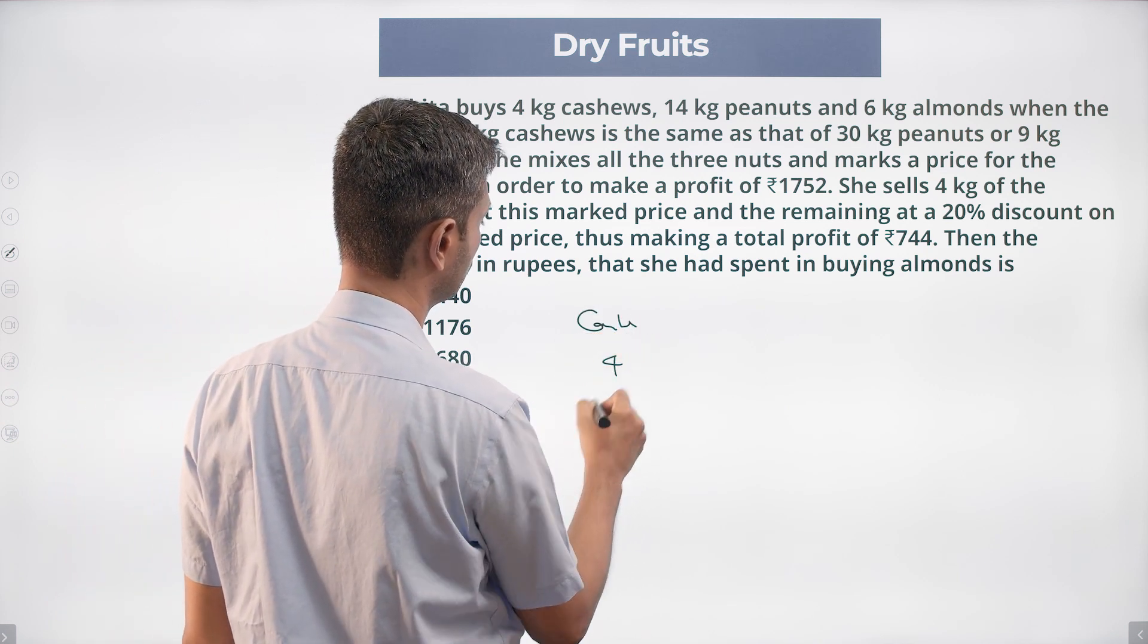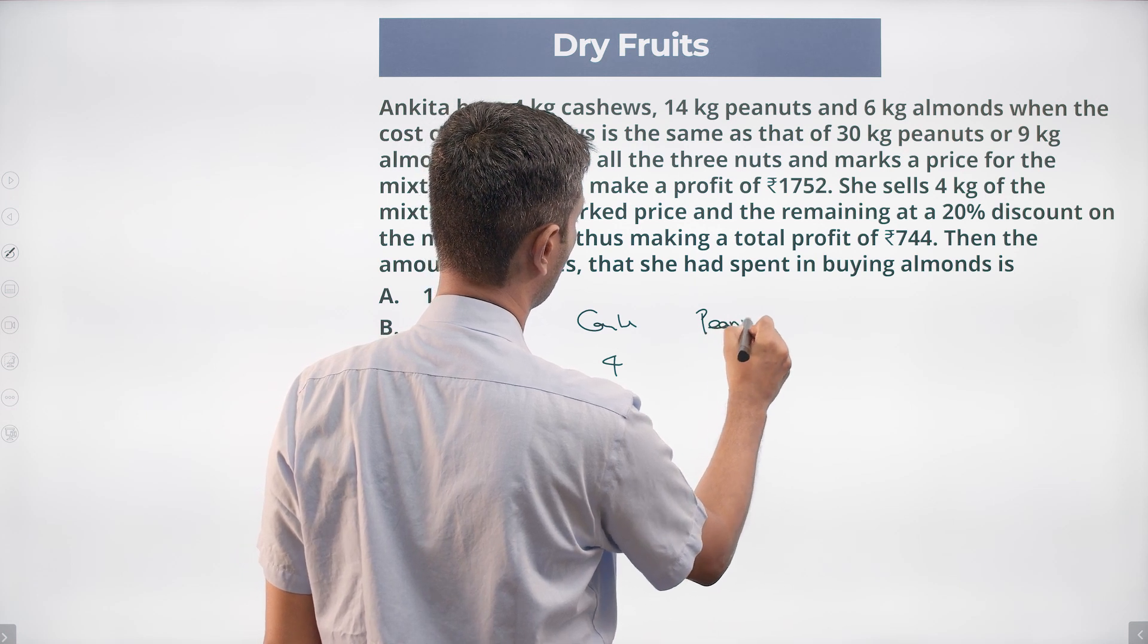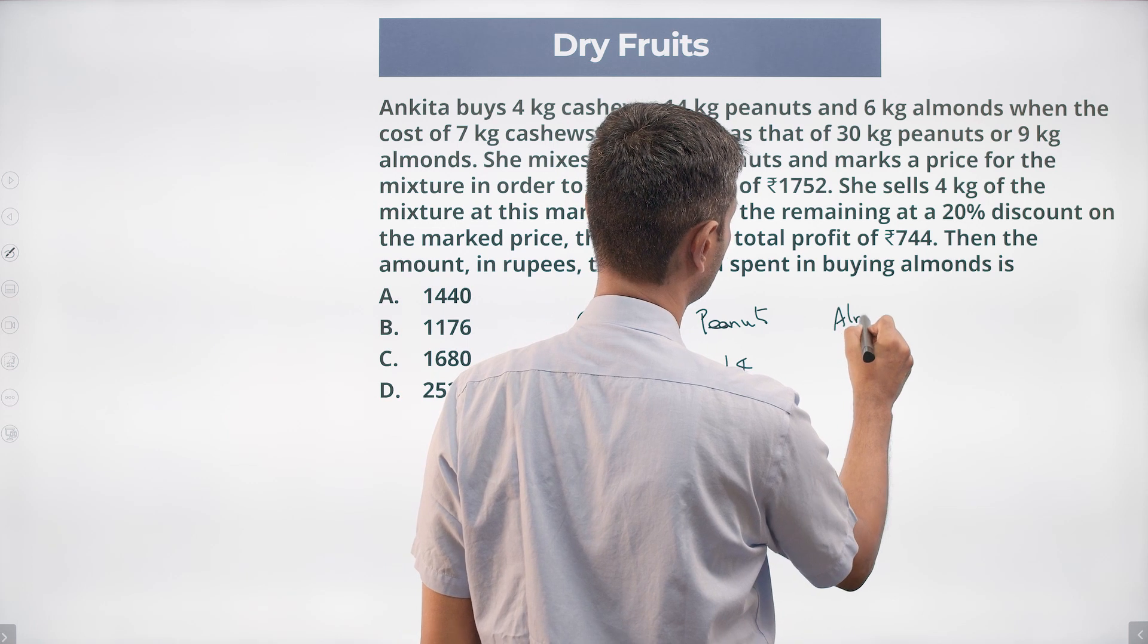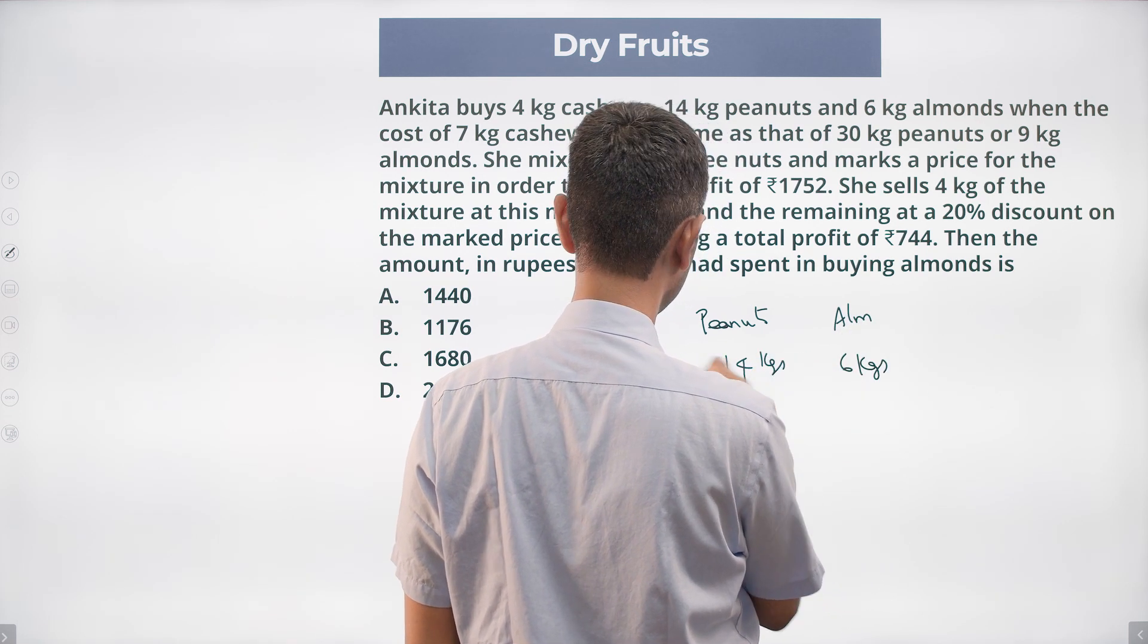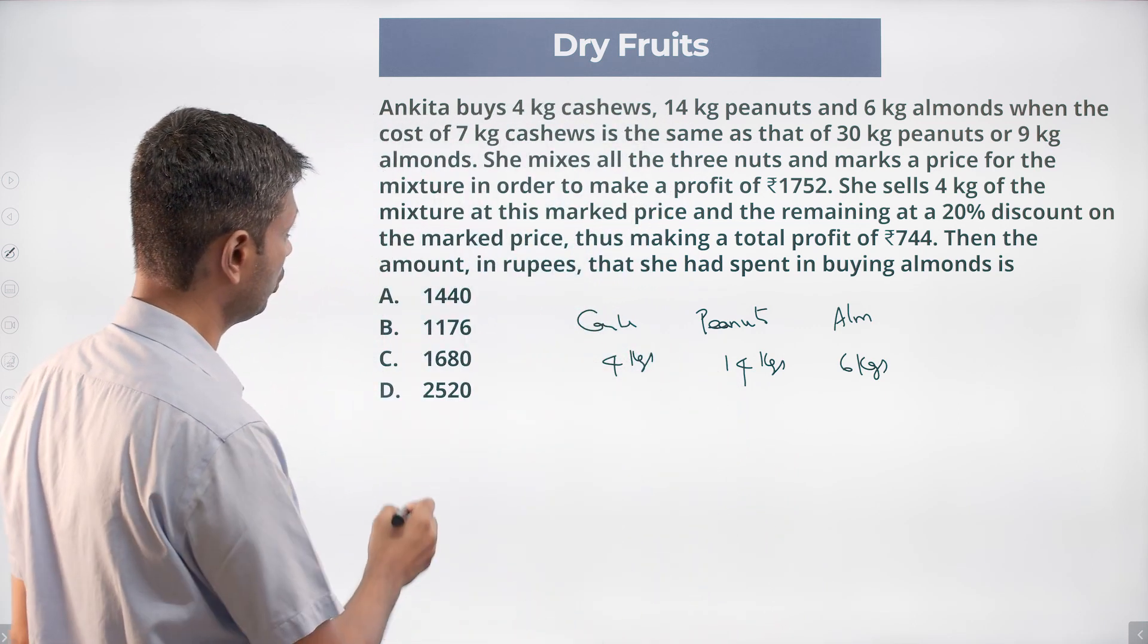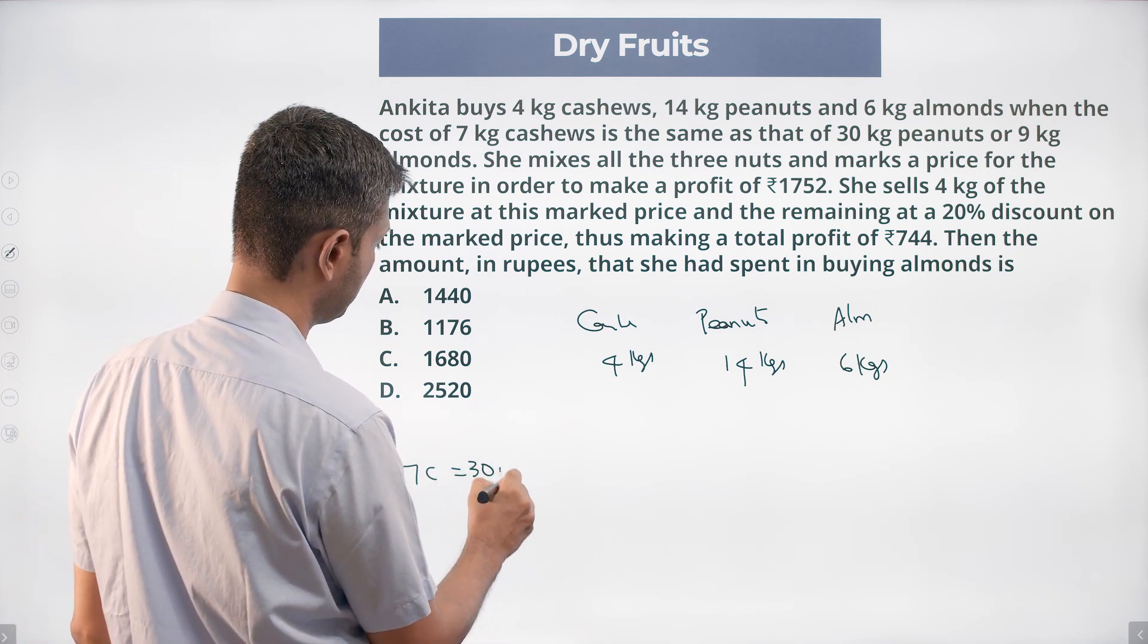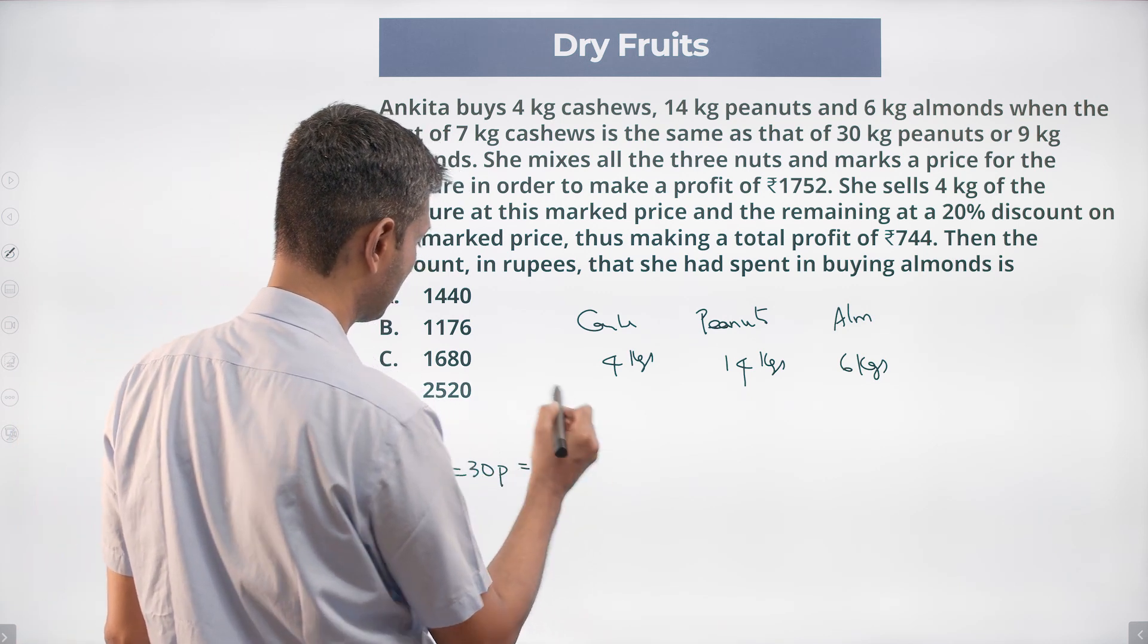Cashews, peanuts she buys 14, and almonds she buys 16. The cost of seven kilograms of cashews, 7C, is equal to 30P, 30 kilograms of peanuts, equal to nine kilograms of almonds.